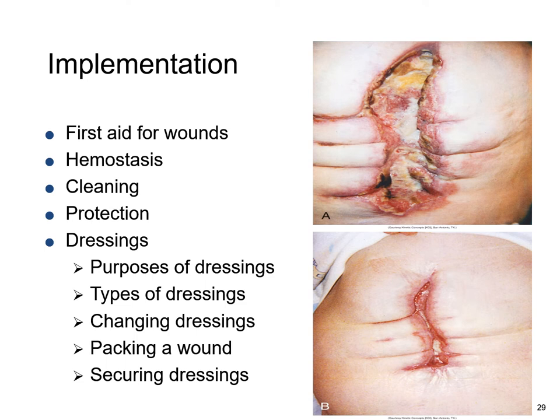A is a dehisced wound before wound vac therapy, and B is a dehisced wound after wound vac therapy. A wound dressing serves many purposes: it protects a wound from microorganism contamination, aids in hemostasis, promotes healing by absorbing drainage and debriding the wound, supports or splints the wound site, promotes thermal insulation of the wound surface, and provides a moist environment.